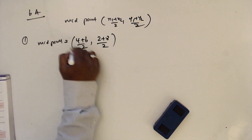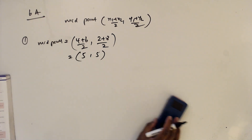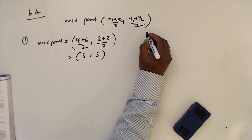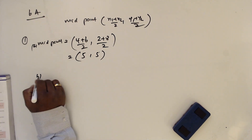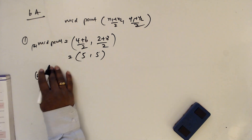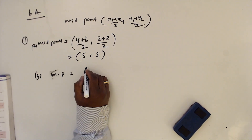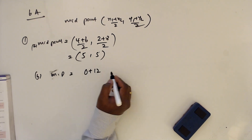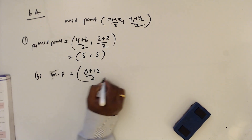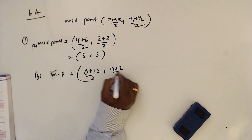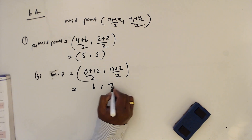So 4 plus 6 divided by 2 is going to be 5. For part b, the x values are 0 plus 12 divided by 2, and the y values are 12 plus 2 divided by 2, giving us 6 for the x value.